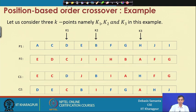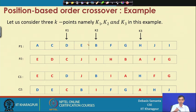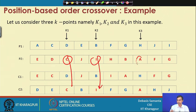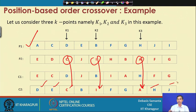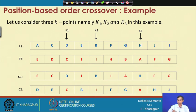If we follow the reverse procedure — copying k1, k2, k3 positions from P2 into C2 (C is at k1, I at k2, A at k3), then filling the rest from P1 excluding already copied values — another offspring C2 is obtained. This is the position-based crossover technique.